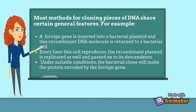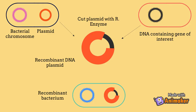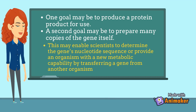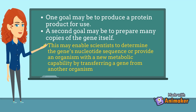Under suitable conditions, the bacterial clone will make the protein encoded by the foreign gene. One goal may be to produce a protein product for use. A second goal may be to prepare many copies of the gene itself, enabling scientists to determine the gene's nucleotide sequence or provide an organism with a new metabolic capability by transferring a gene from another organism.